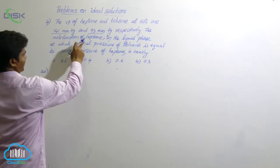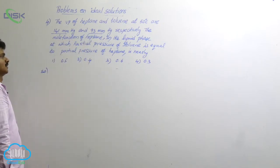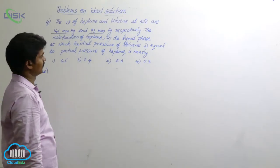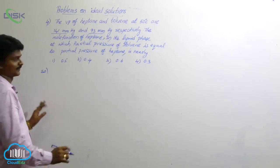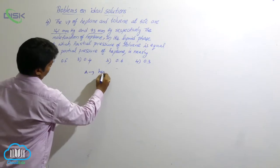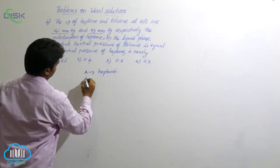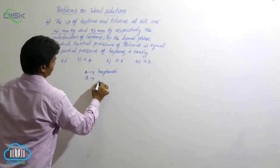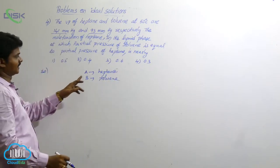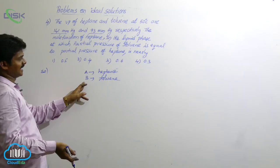So here, mole fraction of heptane in the liquid phase, at which partial pressure of toluene is equal to partial pressure of heptane. So, condition is given there. Let A be the heptane and B for toluene. Consider A as heptane, B as toluene.